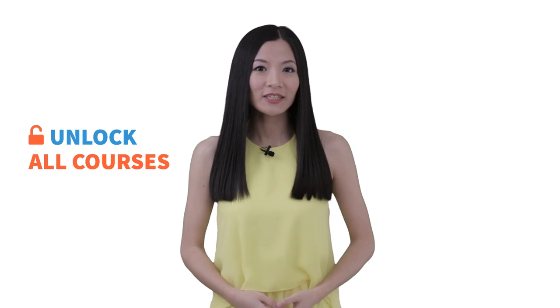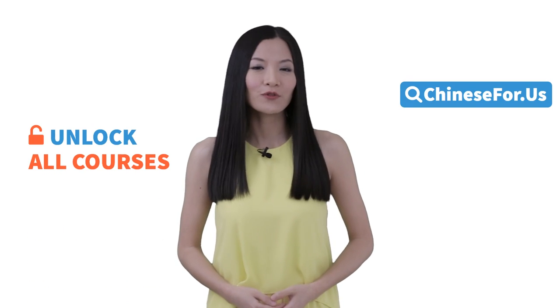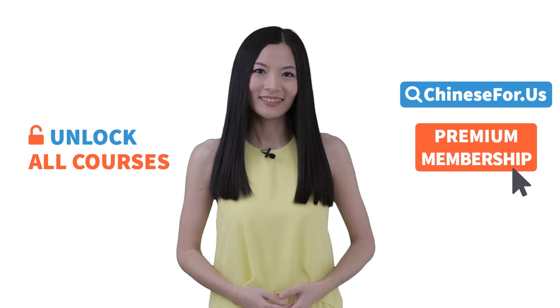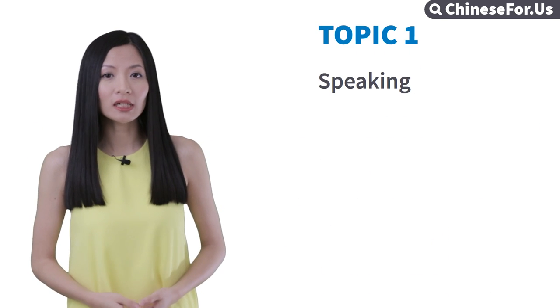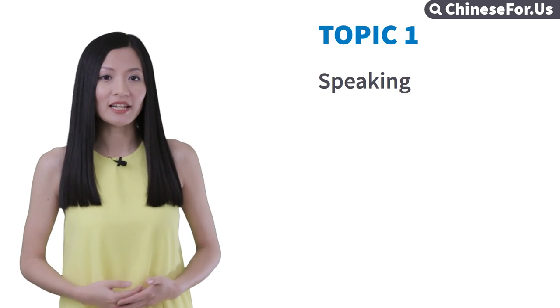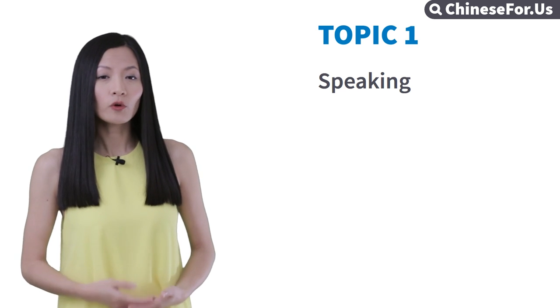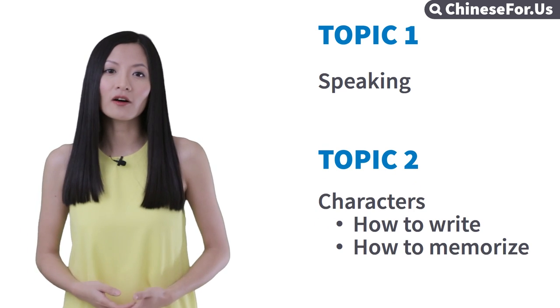Get full access to all of our lessons with the Chinese For Us Premium Membership. Hi, nimen hao, wo shi Lili. Welcome back. In topic one, we learned how to say our nationality and we used four new characters. Now we'll learn how to recognize and write them.